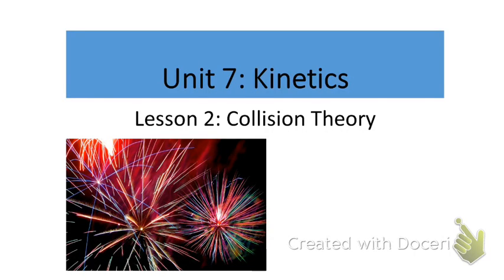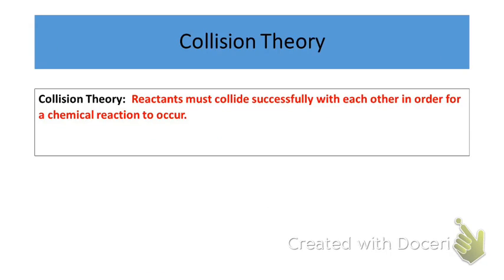Let's get started with lesson two: collision theory. By definition, the collision theory states that reactants must collide together successfully in order for a chemical reaction to occur. Reactant molecules contain kinetic energy, and as those molecules move around at high velocities, they collide with each other from time to time. If those collisions are successful, a chemical reaction can be initiated and we begin to form product. But until those collisions occur, no reaction can start.